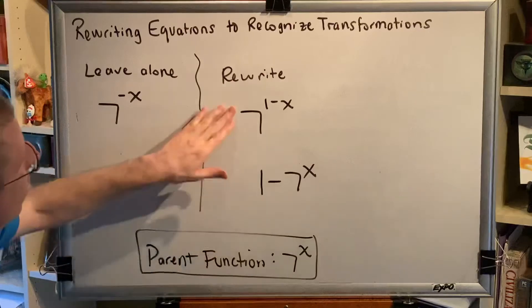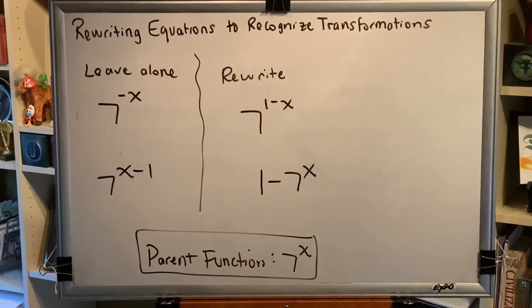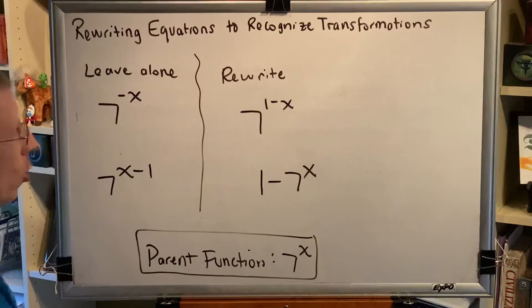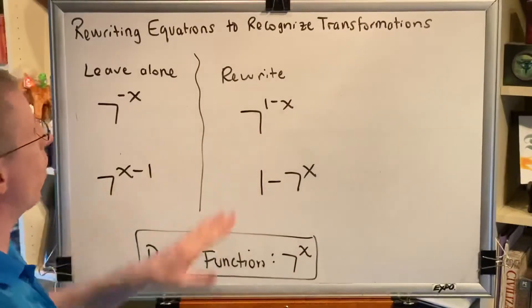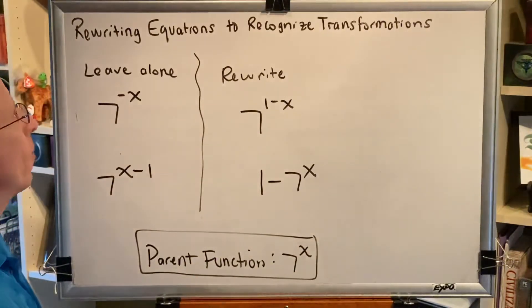However, both of these in this column will have to be rewritten because a single action cannot be used to go from the parent function to what we have here. Let's look at a couple of examples of this.